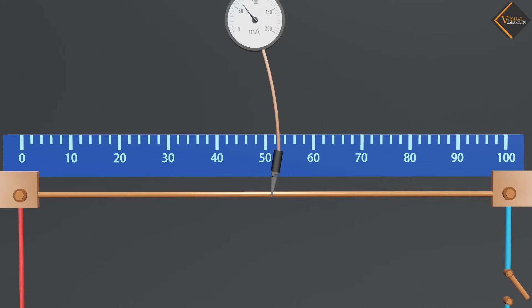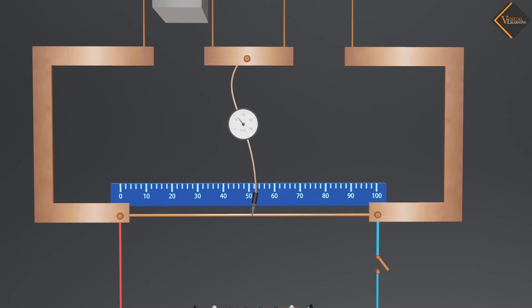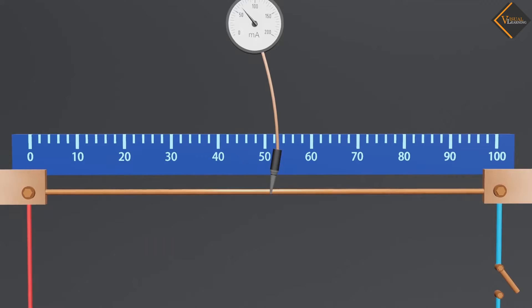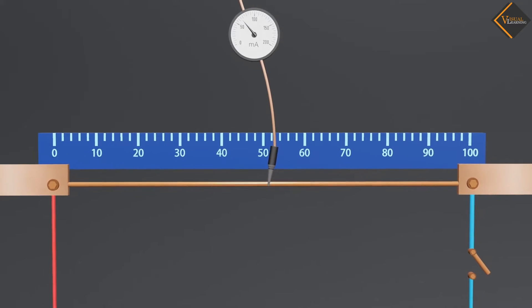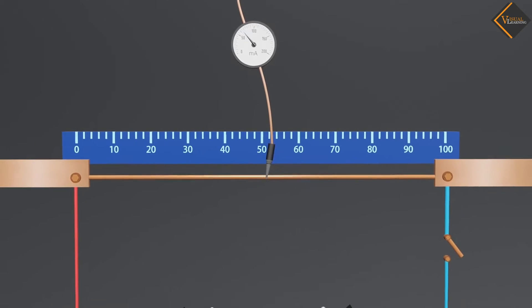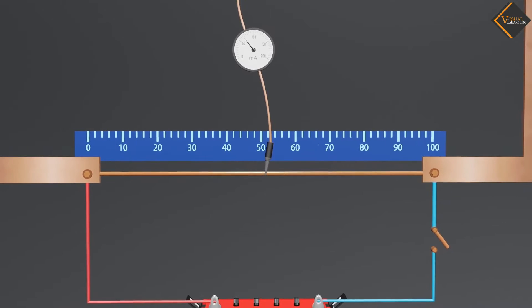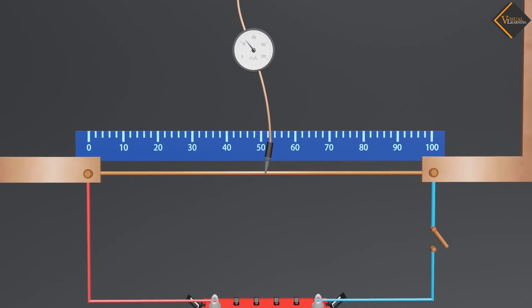In the animation, we see a 100 cm wire connected by two metallic strips. The unit length resistance of this wire is initially known. Parallel to this wire, a 100 cm long scale is also attached.